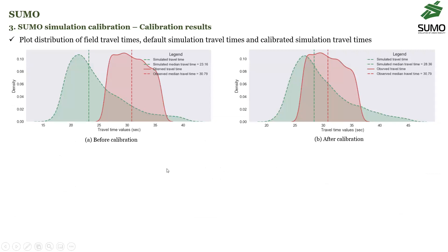Initially before calibration, we compared the travel time from SUMO and the travel time from Streetlight. Looking at the distribution, the median values were quite far apart. But after calibration, the median values are quite comparable. A little more calibration is still required — we are yet to acquire the intersection signal timing, specifically the intersection cycle length. With that, we anticipate a better fit between the calibrated travel time and the simulated travel time.